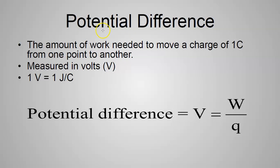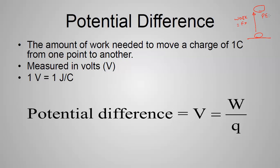Let me define potential difference. Remember back when we did work and energy — we had potential energy. If I had a rock on the ground and picked it up, that would require some work equal to force times distance. When the rock is up in the air, it has potential energy — a function of its position, mgh. mg is the force I used to lift it, h is the distance, so force times distance equals the potential energy.